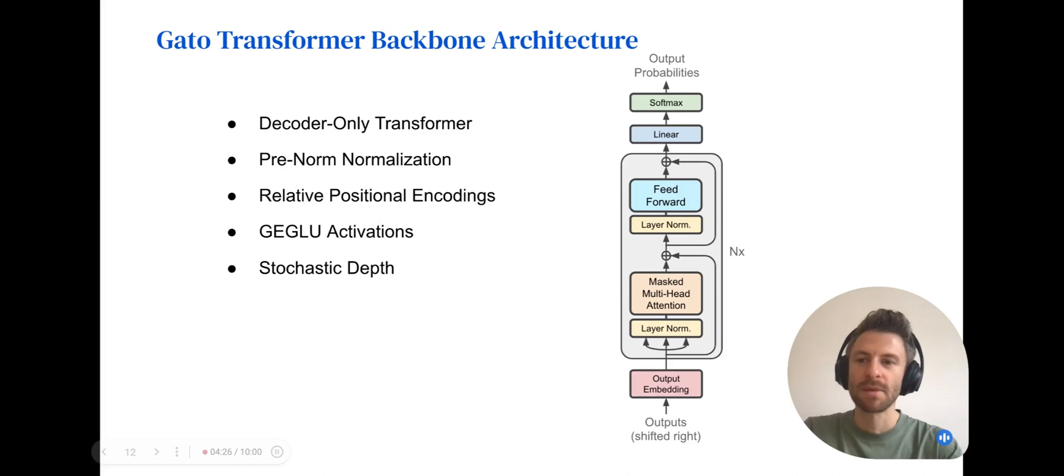So moving on to the model itself, the Gato model uses a standard decoder-only transformer with a couple of notable differences. We use layer-norm before the attention layer instead of afterwards, and use relative position encodings. We also use GEGLU activations and stochastic depth during training.